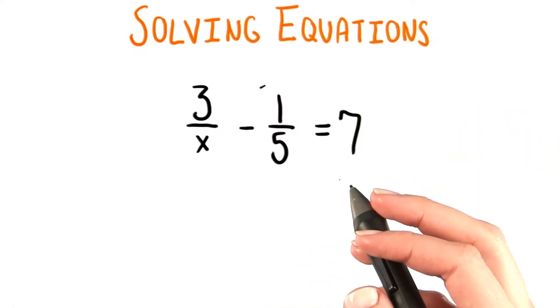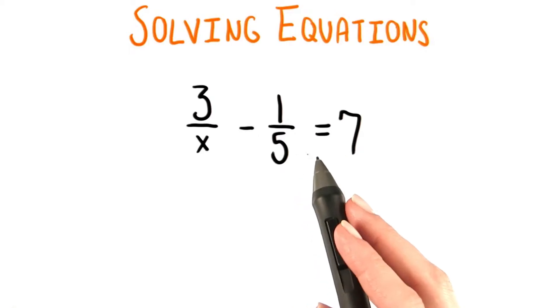Let's look at a new equation. We have 3 over x minus 1 over 5 is equal to 7.